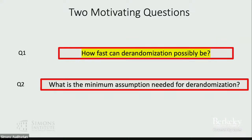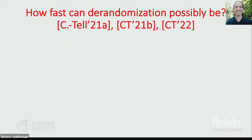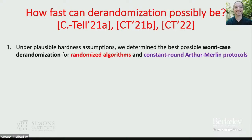Let me start with my work on the first topic: how fast can de-randomization possibly be? I have joint work with Roy Tal. He will also be speaking about related subjects in the next talk. Under plausible hardness assumptions, we essentially determine the best possible worst-case de-randomization — meaning the de-randomization must work on every input — for randomized algorithms and constant-round Arthur-Merlin protocols. Unfortunately, there will be some unavoidable overhead, which cannot be removed assuming certain hardness assumptions from fine-grained complexity.